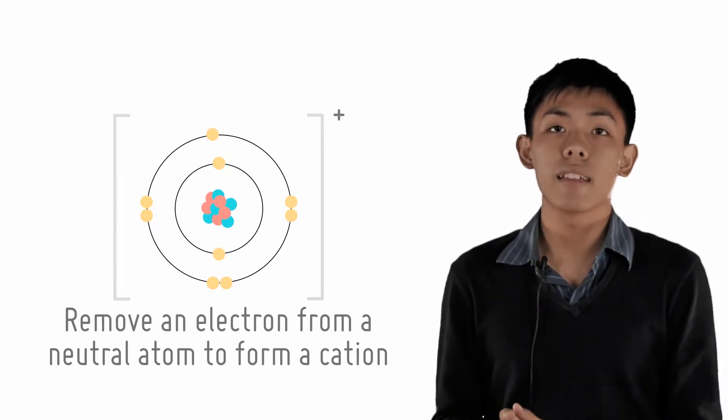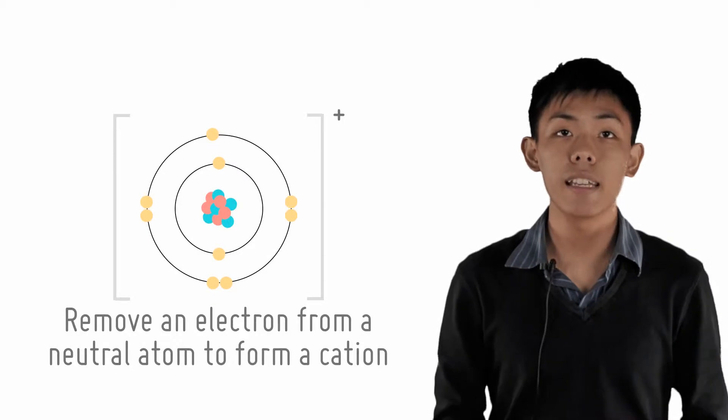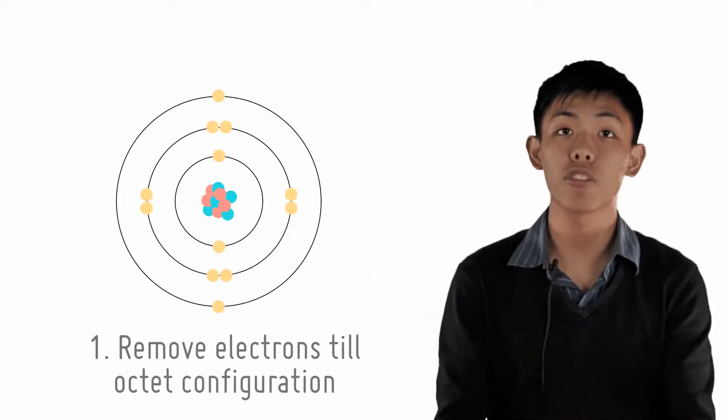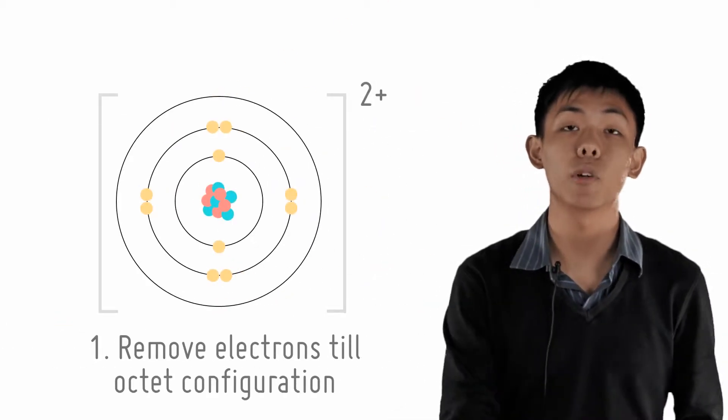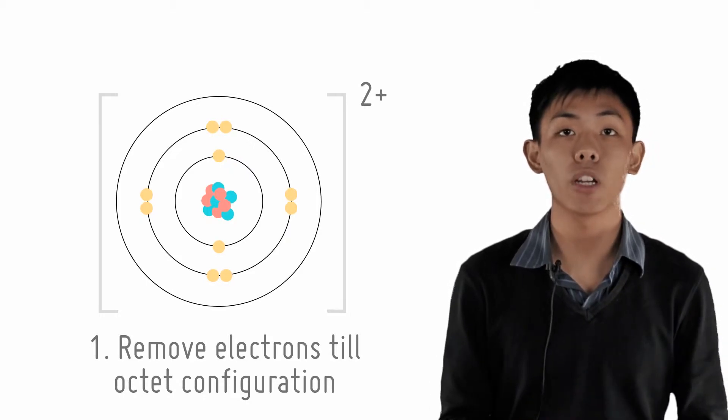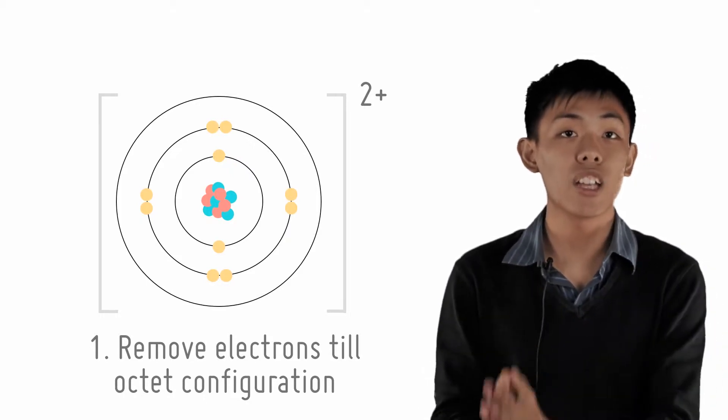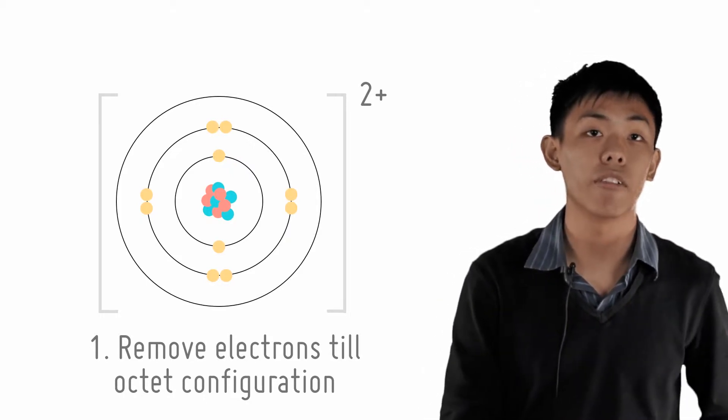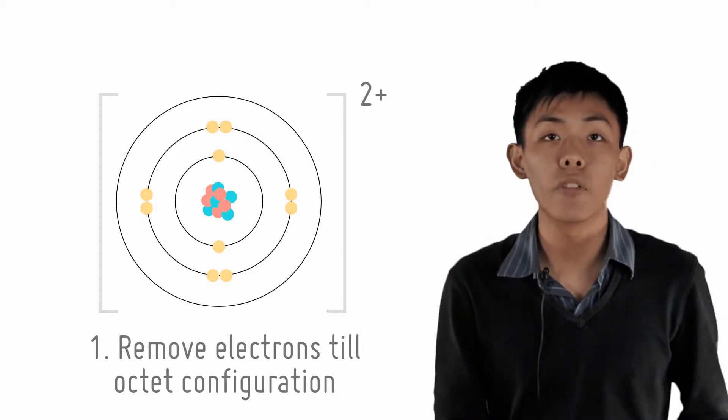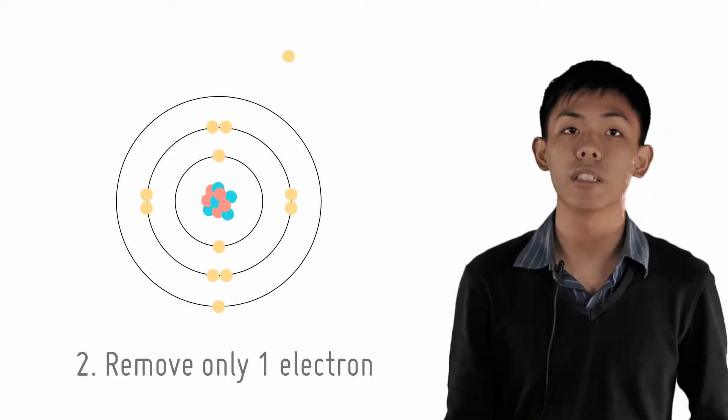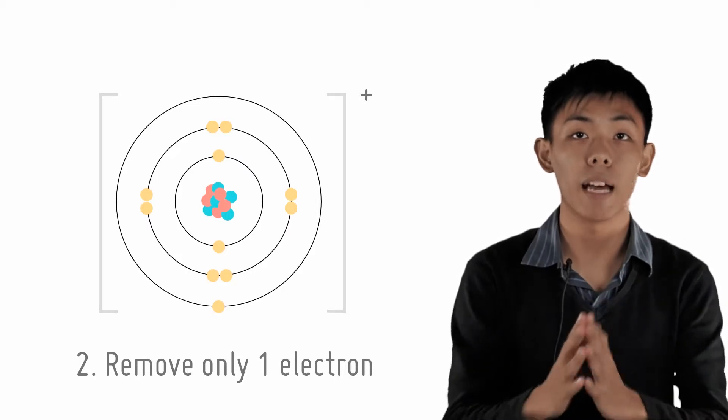There are two main cases to consider. The first is if we consider removing as many electrons before the atom becomes a stable cation. This involves removing all of the outermost electrons such that the atom attains octet configuration. The second is if we consider removing only one electron from the atom, hence making a plus one cation.